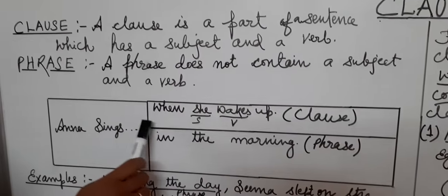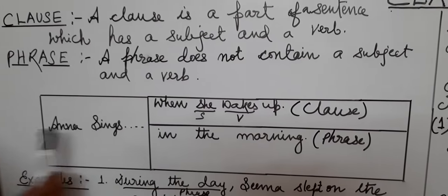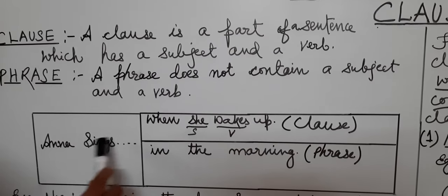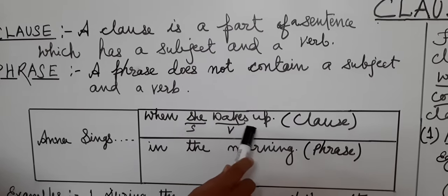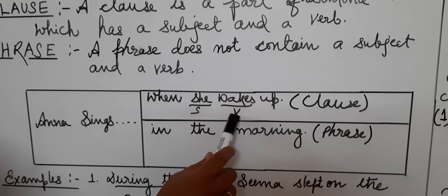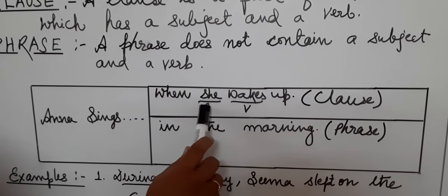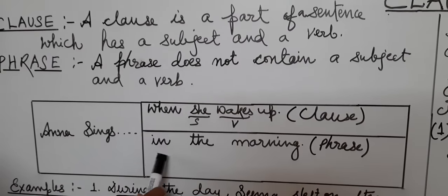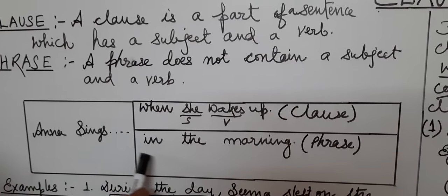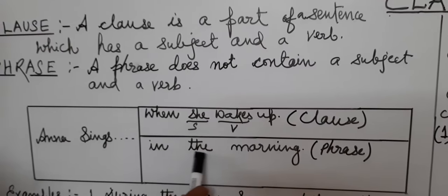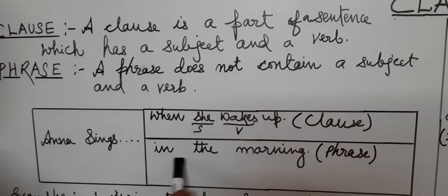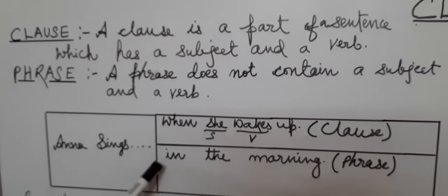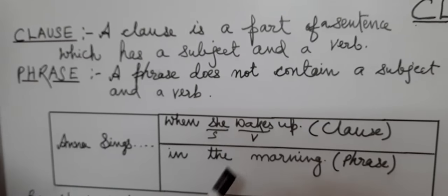Like 'Anna sings when she wakes up.' Here 'she' is subject and 'wakes' is a verb. So 'when she wakes up' is a clause because it has a subject and a verb — it is a part of a sentence which contains subject and a verb. Now see 'Anna sings in the morning.' This is also part of a sentence but it has no subject or verb, so it is a phrase. Jis mein subject or verb nahi hota hai.